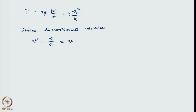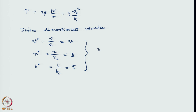Similarly, we define a dimensionless length, which is x divided by the characteristic length — we call it xi. The dimensionless time, tau, is the true time divided by the characteristic time scale. So these are the dimensionless variables of the problem.